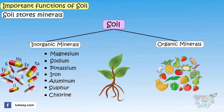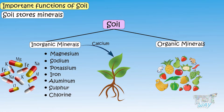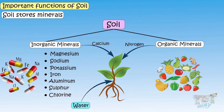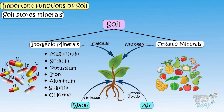Inorganic minerals provide calcium to the plant, whereas organic minerals provide nitrogen to the plant. Water provides hydrogen to the plants. Air provides carbon dioxide to the plants.